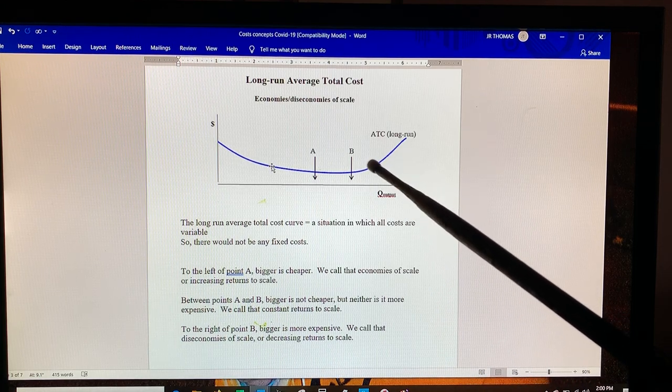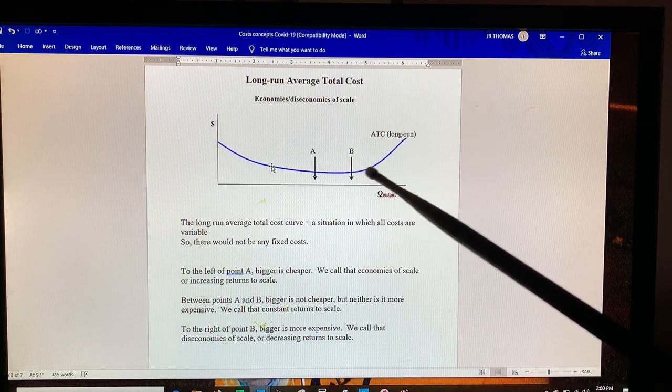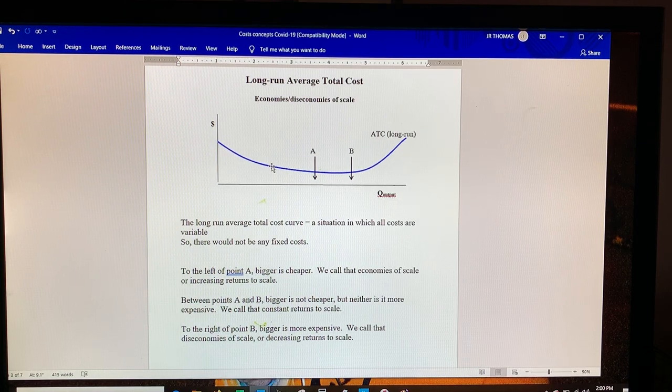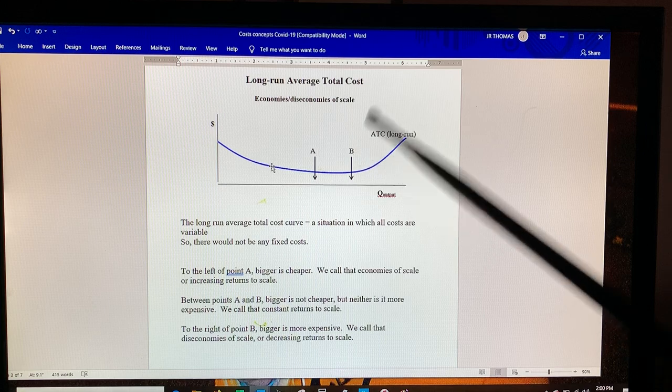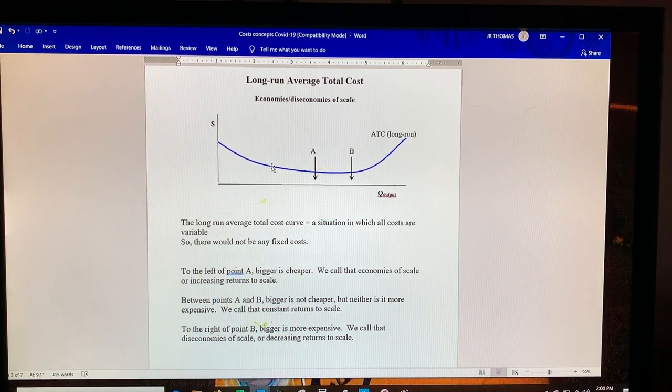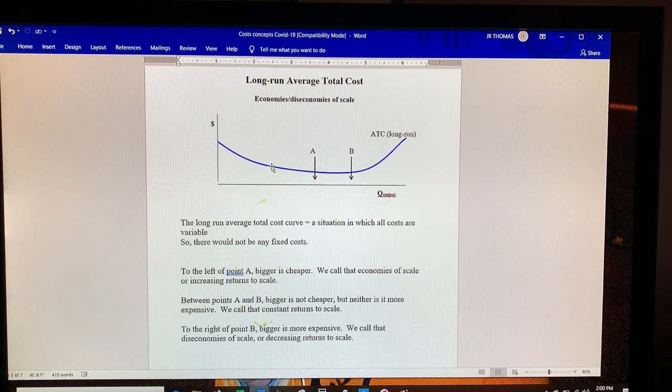When the average flattens out, we call that constant returns to scale. That's between points A and B. Bigger is not cheaper, but it's not more expensive either.